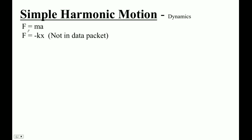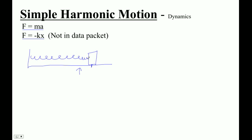Okay, let me blow your mind a little bit here. In the data packet, we've got F equals ma — that's not exactly mind-blowing. Not in the data packet, we've got force equals negative k times displacement. And so this means that if we've got some mass at an equilibrium position, and the mass is actually displaced from equilibrium with a spring, that means there's actually a force.